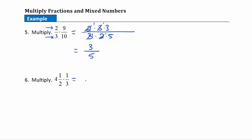Now let's look at this problem with a mixed number. We don't ever multiply with a mixed number, so I want to change this mixed number into an improper fraction. I work in a circle: first multiply 4 times 2, take that answer and add it to the numerator. So 4 times 2 is 8, and 8 plus 1 is 9. I write 9 as the numerator; the denominator of 2 doesn't change. So it becomes the improper fraction 9/2.